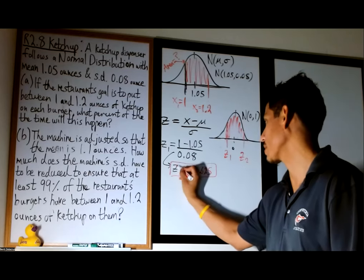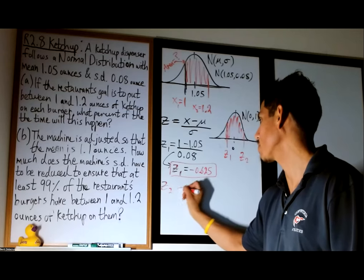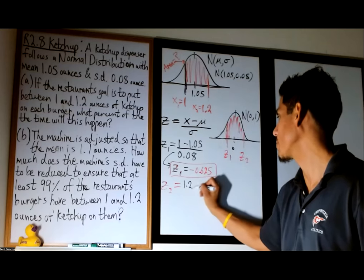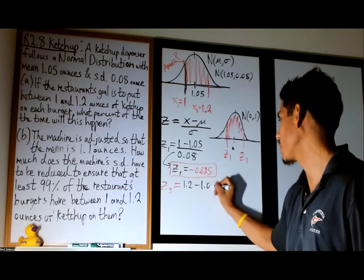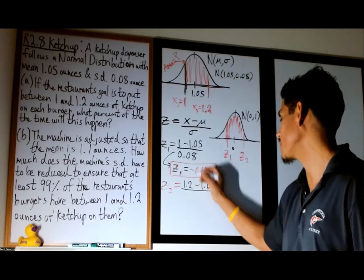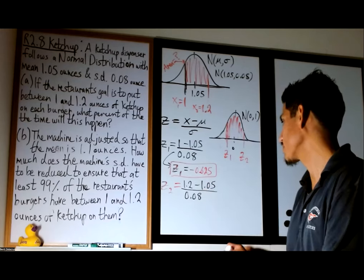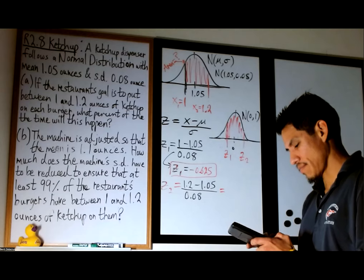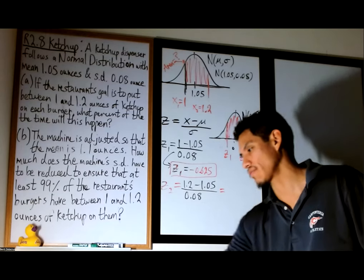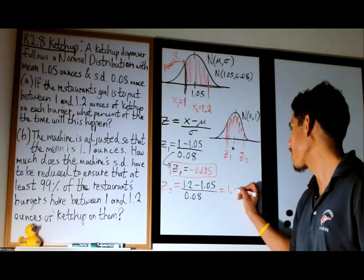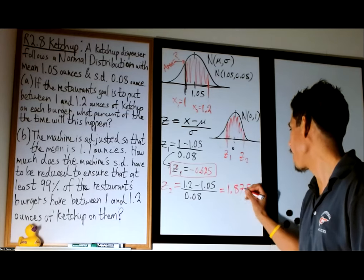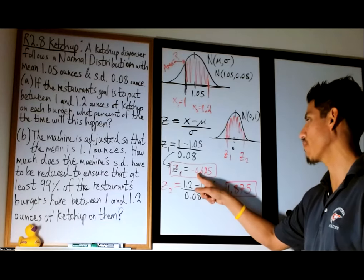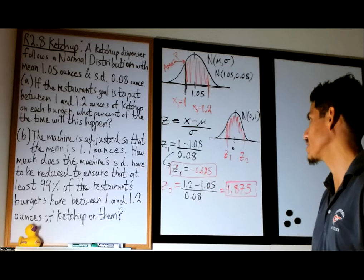And z2 will be x2 minus the mean over the standard deviation: 1.2 minus 1.05, over 0.08, which gives us 0.13 divided by 0.08, so we get 1.875. We want to find the area between the z-scores of negative 0.625 and 1.875.